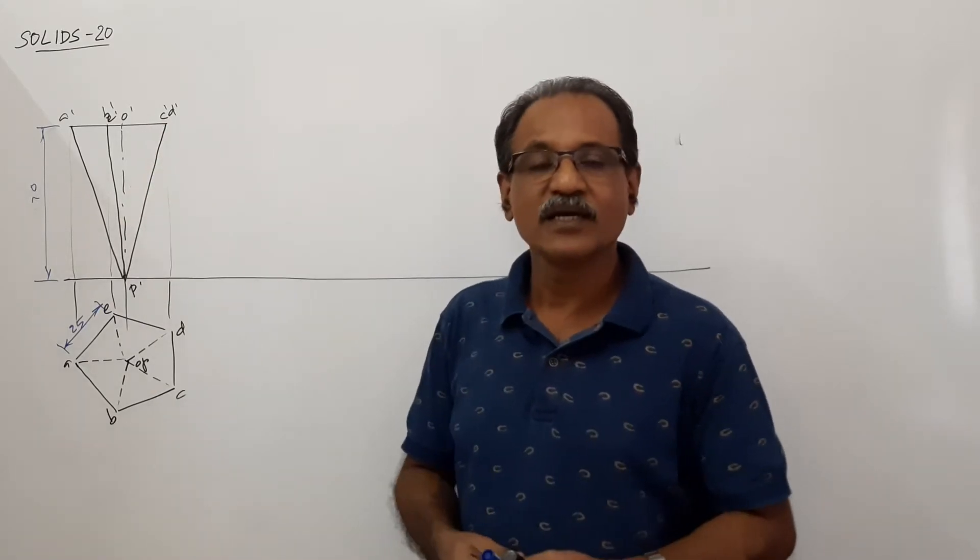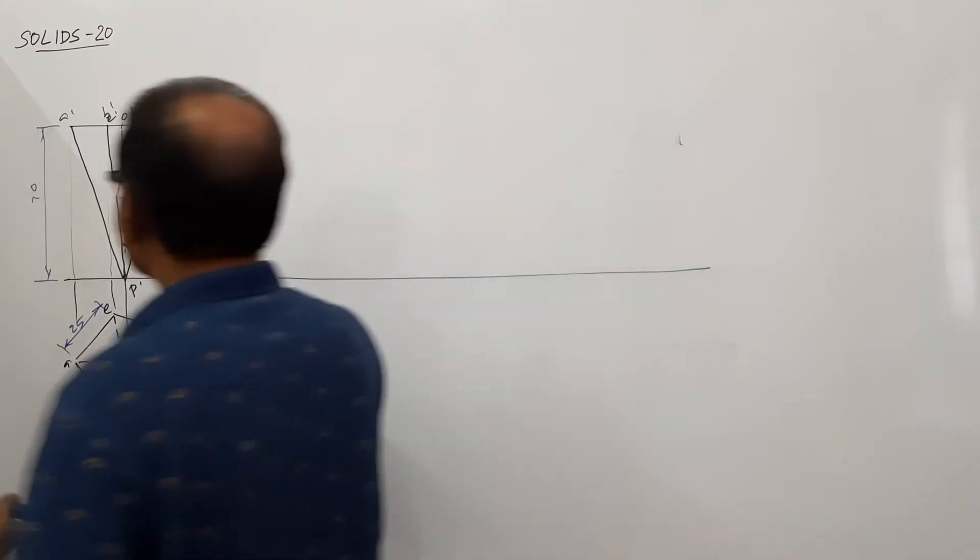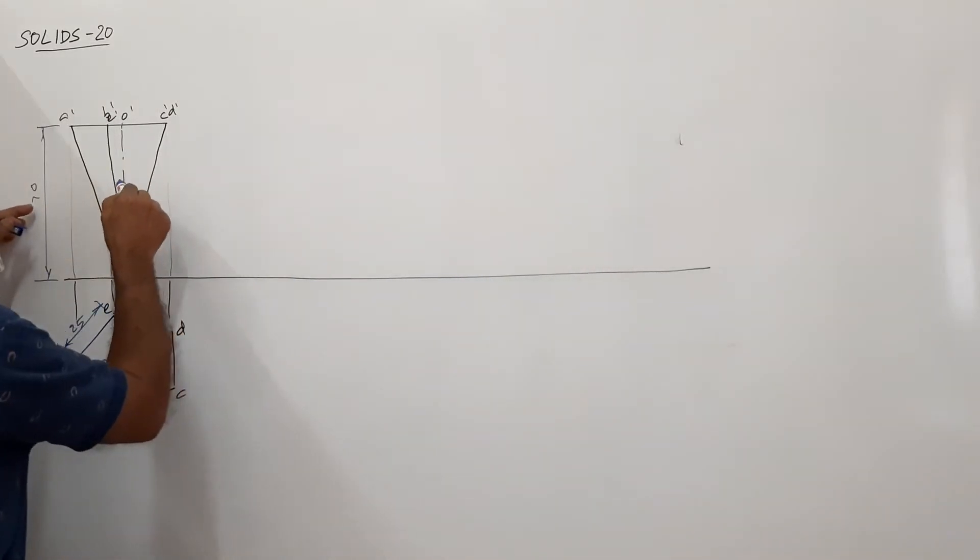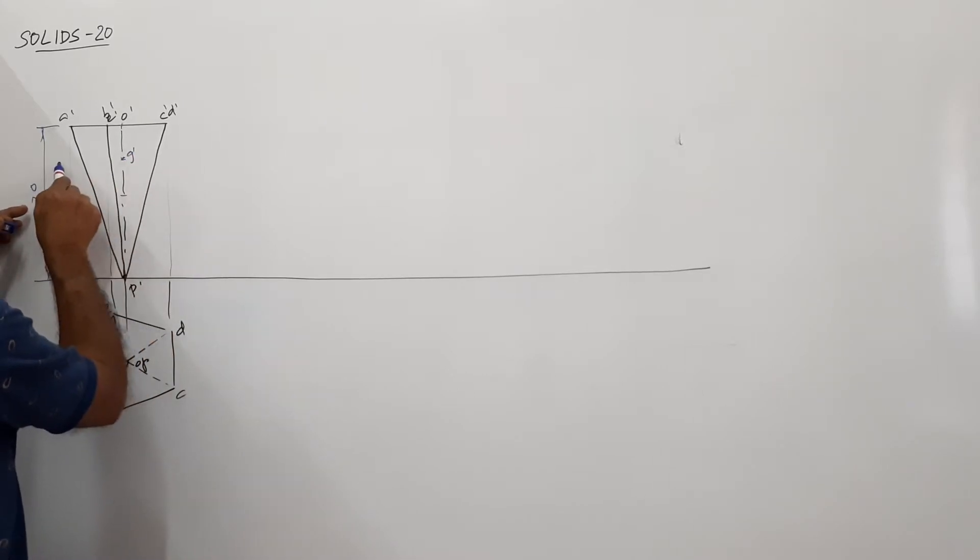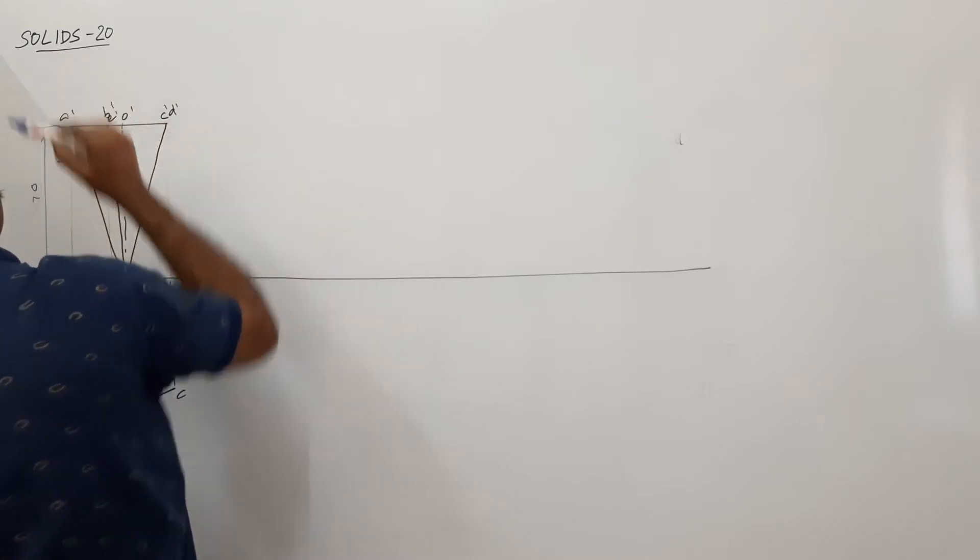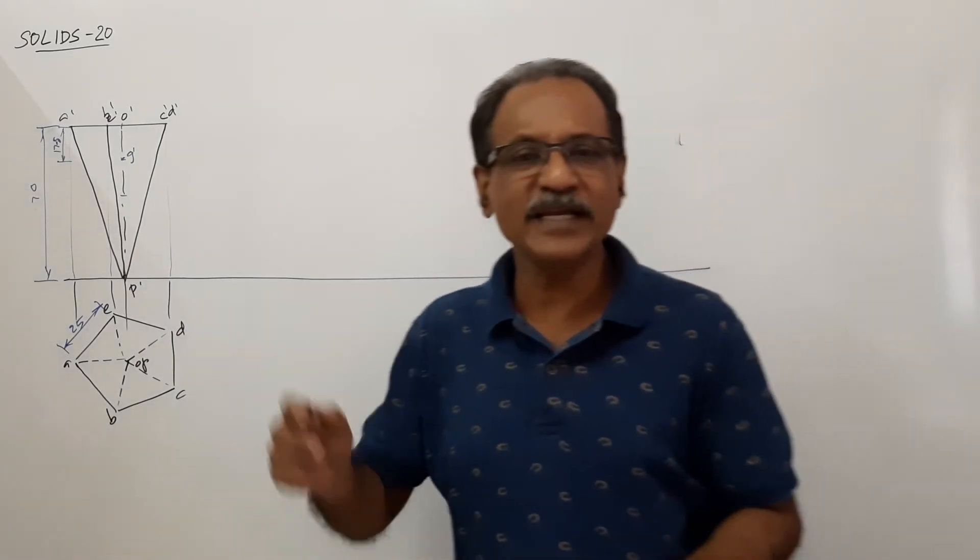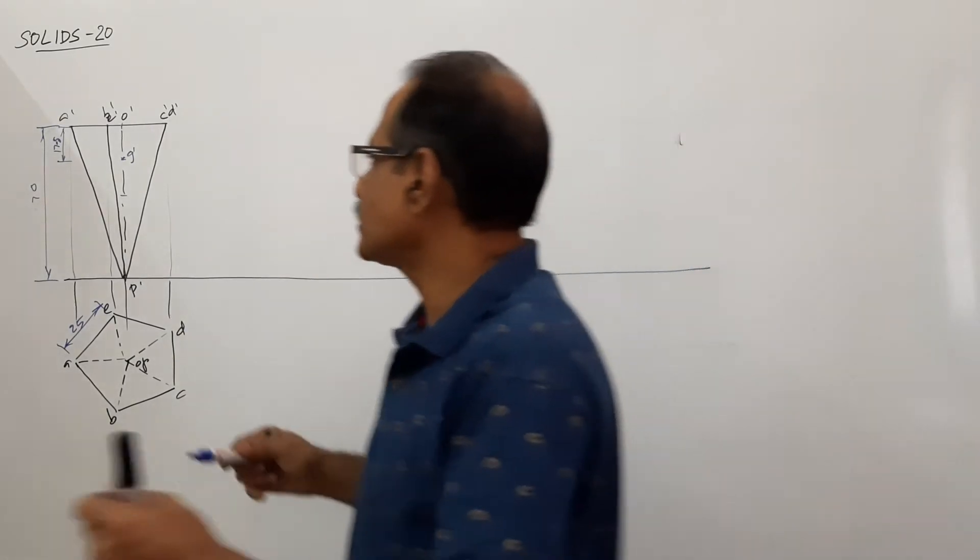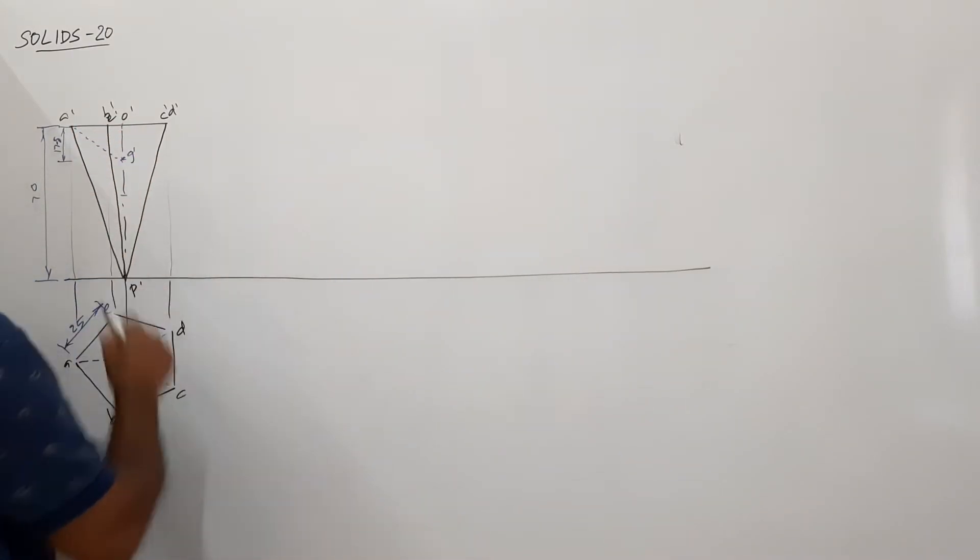I have drawn the plan and elevation. Where is the center of gravity of the pyramid? One-fourth from the base. So axis length is 70, this is half, this is one-fourth. G dash here it comes, 17.5. You have to suspend it about G dash. What does it mean? It means that A dash, G dash when connected should be vertical.